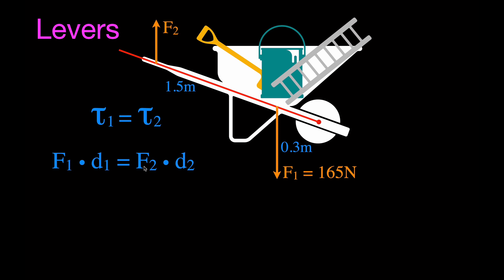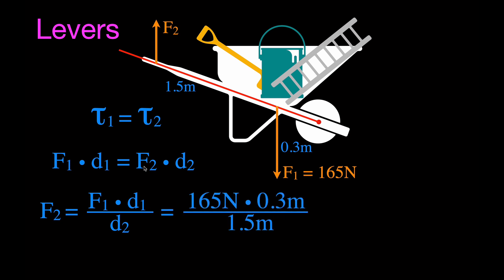Solving for F₂ (the lifting force at the handles): F₂ equals F₁ times d₁ divided by d₂. Plugging in: 165 × 0.3 ÷ 1.5 = 33 Newtons. So the minimum force needed to lift those objects in the wheelbarrow is 33 Newtons.